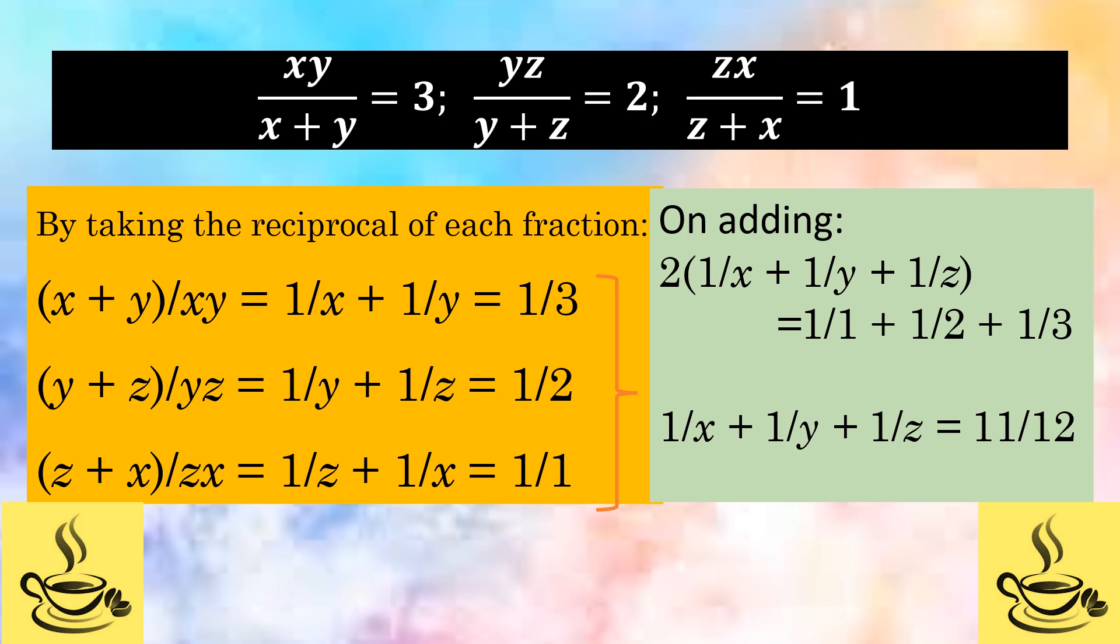On adding, we get double the sum of 1 by x plus 1 by y plus 1 by z. Now, divide by 2, and we get 1 by x plus 1 by y plus 1 by z.